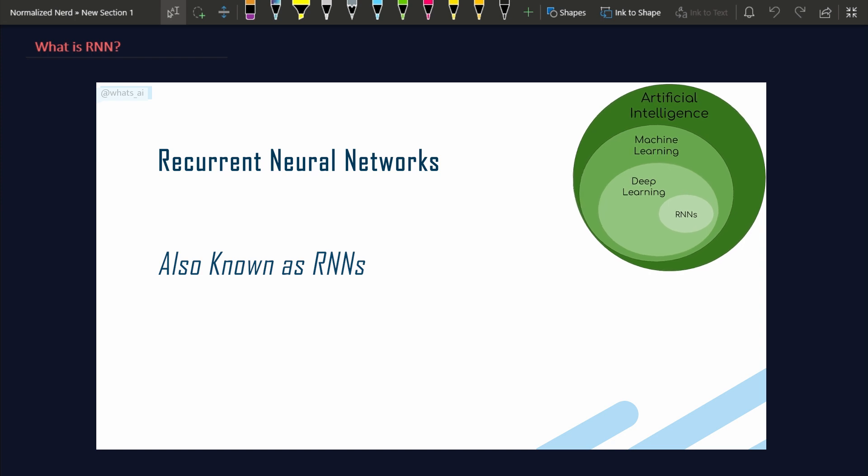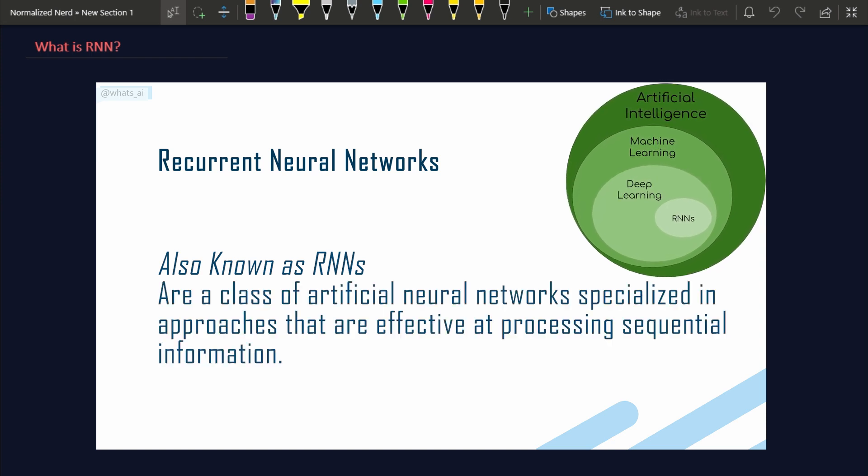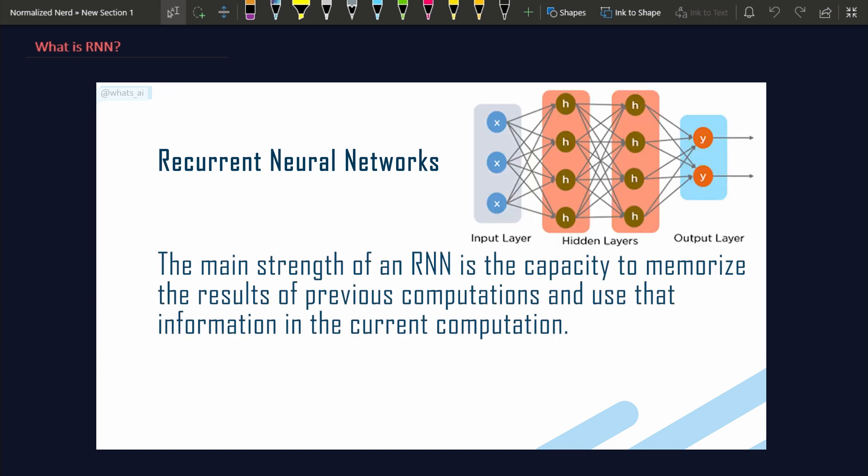Recurrent neural networks, also known as RNNs, are a class of artificial neural networks specialized in approaches that are effective at processing sequential information. The main strength of an RNN is the capacity to memorize the results of previous computations and use that information in the current computation.